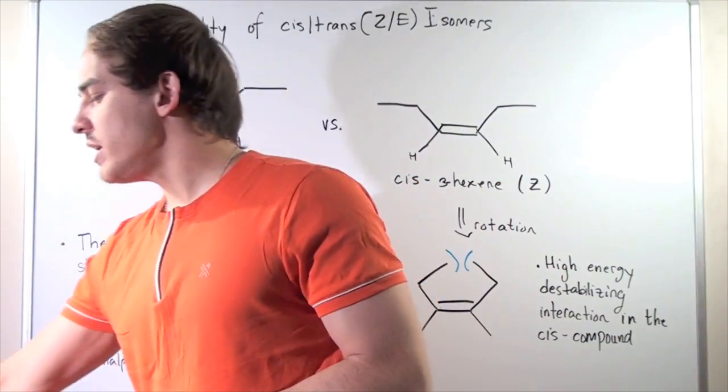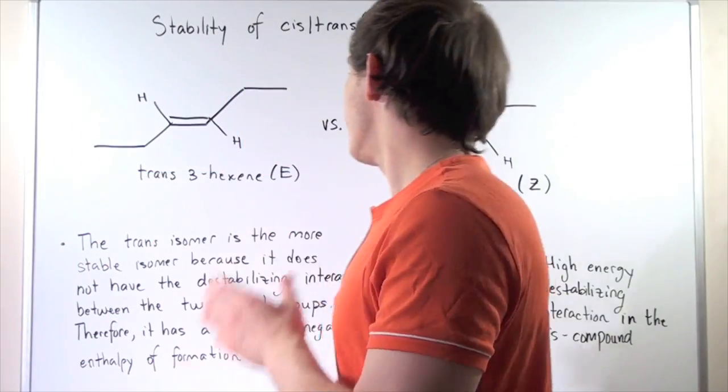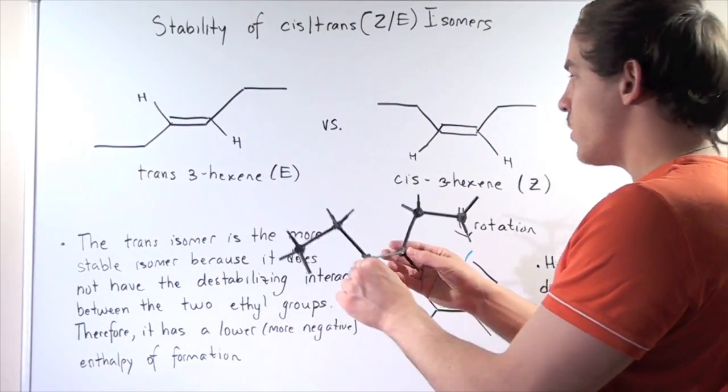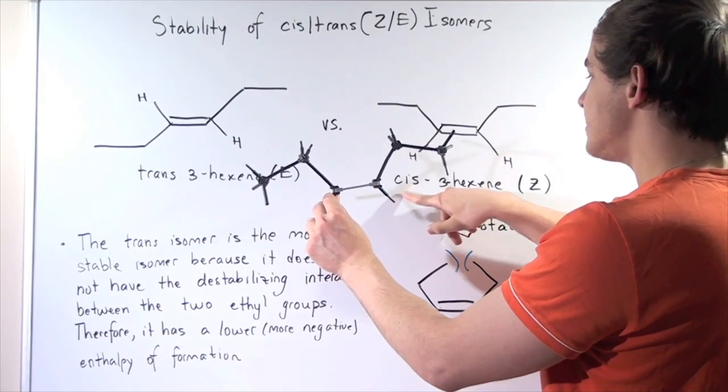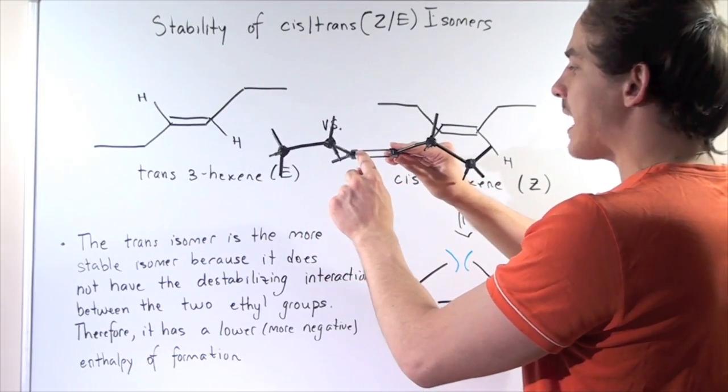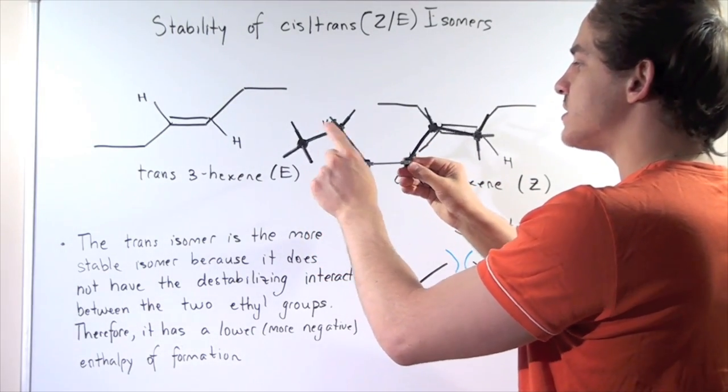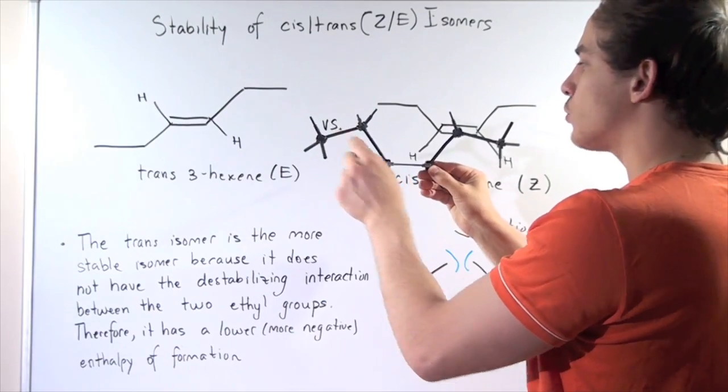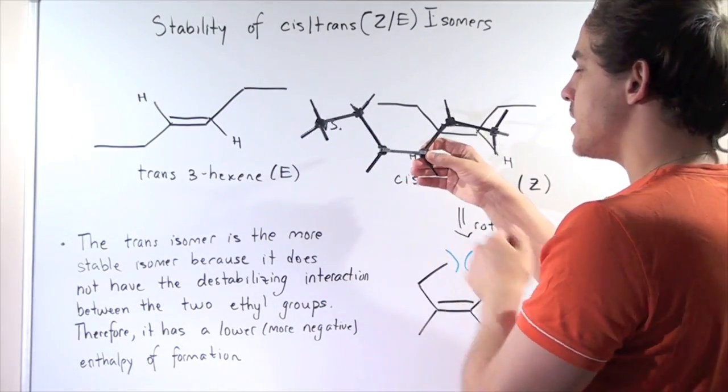So let's examine our three-dimensional model of this 3-hexene. So here we have our cis-3-hexene. Here's our double bond and here are our single bonds. So we have the methyl group, the methyl group, and our two H's here.